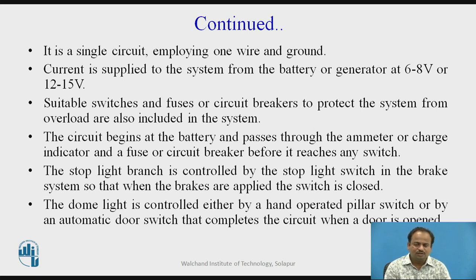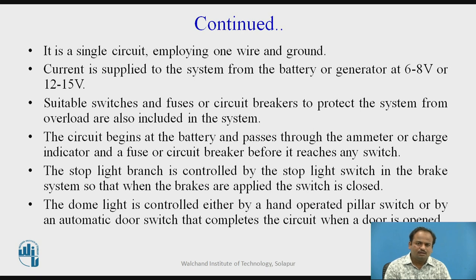Suitable switches and fuses or circuit breakers to protect the system from overload are also included. The circuit begins at the battery and passes through the ammeter or charge indicator and a fuse or circuit breaker before it reaches any switch. The stop light branch is controlled by the stop light switch in the brake system, so that when the brakes are applied the switch is closed. The dome light is controlled either by a hand-operated pillar switch or by an automatic door switch that completes the circuit when the door is opened.